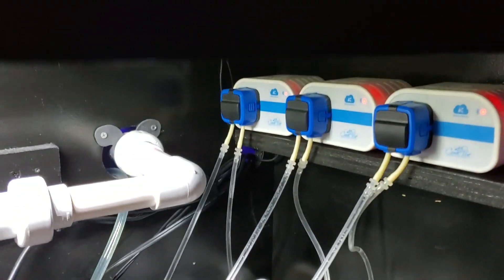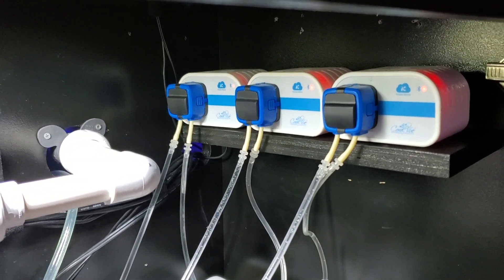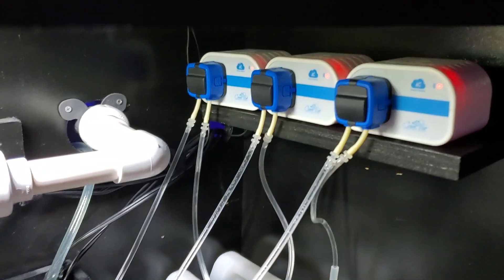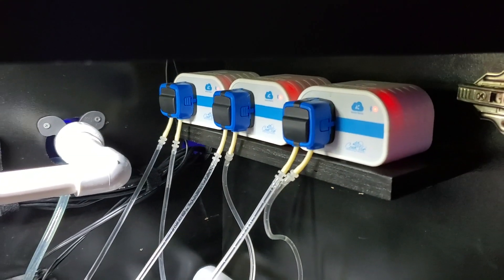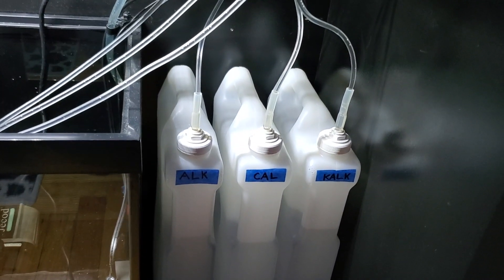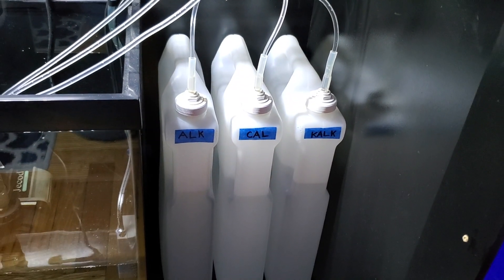Anyway, show you guys what I have real quick and then we'll talk about what it is that I'm going to be doing to change them. So these are the Kamoer X1s. Right now I have them all piggybacked, which is really cool, and I do have the BRS slimline jugs or whatever they're called. They hold a little over a gallon.